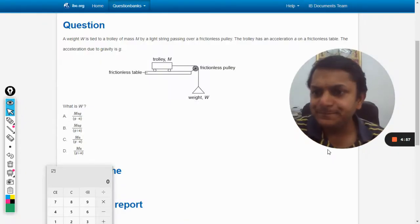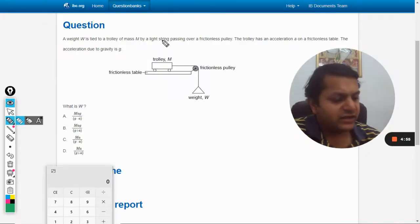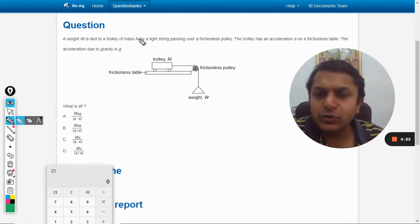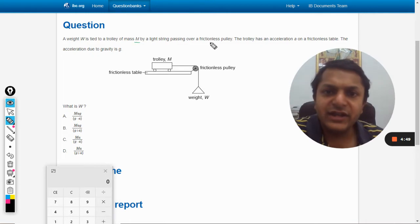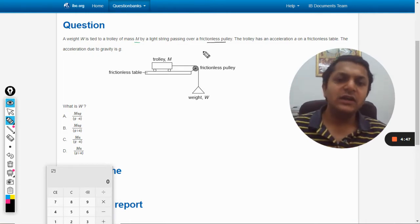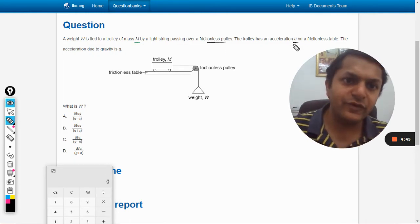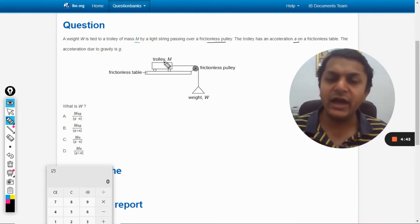In this question, a weight W is tied to a trolley of mass m, and the light string is passing over a frictionless pulley. The trolley has an acceleration a on a frictionless table. The acceleration is given; we have to assume it as a, and the acceleration due to gravity is g.